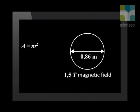Half of 0.86 is 0.43. This is squared then multiplied by the value of pi to get an answer of 0.58 square meters.